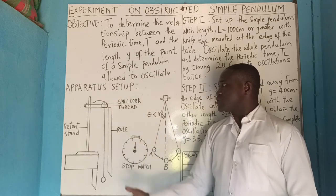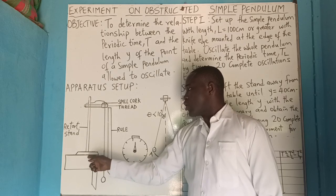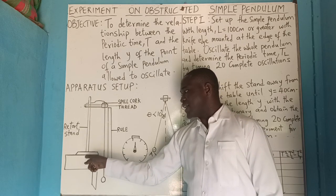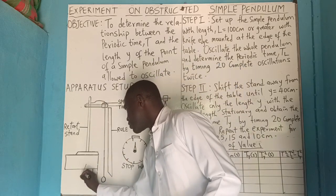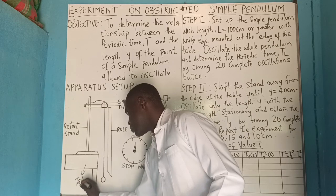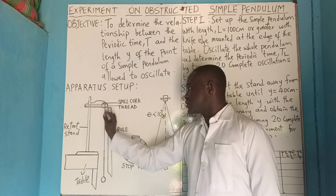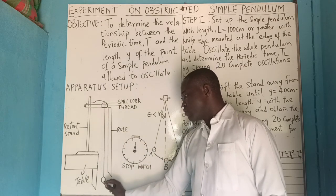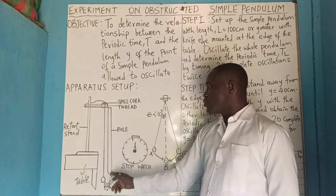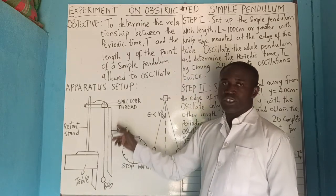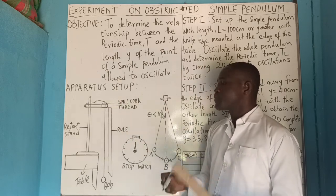Look at the apparatus setup. We have a stand on a desk, a table or desk. Then, look at the thread holding the pendulum ball. This is the ball. Look at the meter rule you will use to take your measurement. Look at the thread. Look at the split cork.